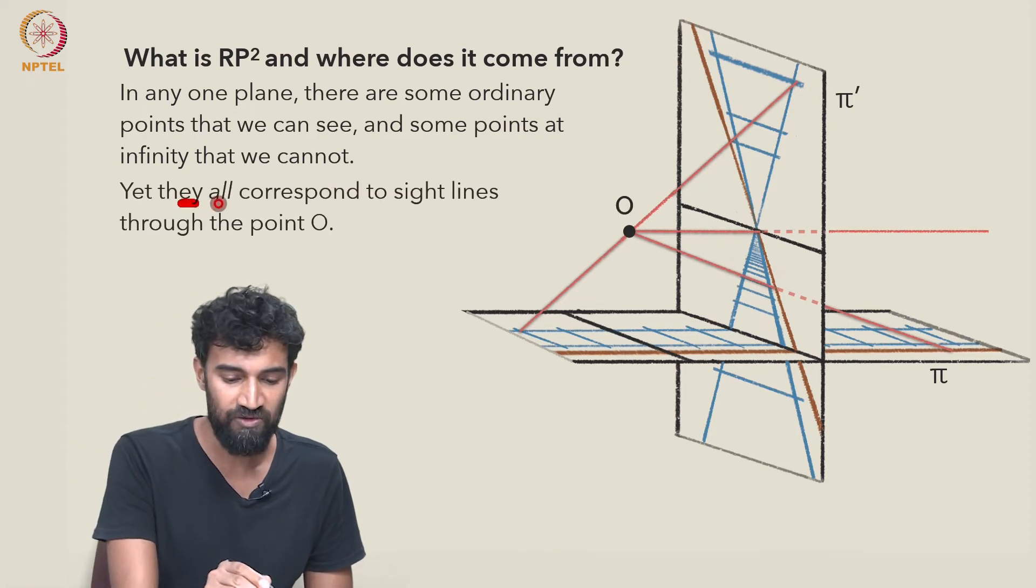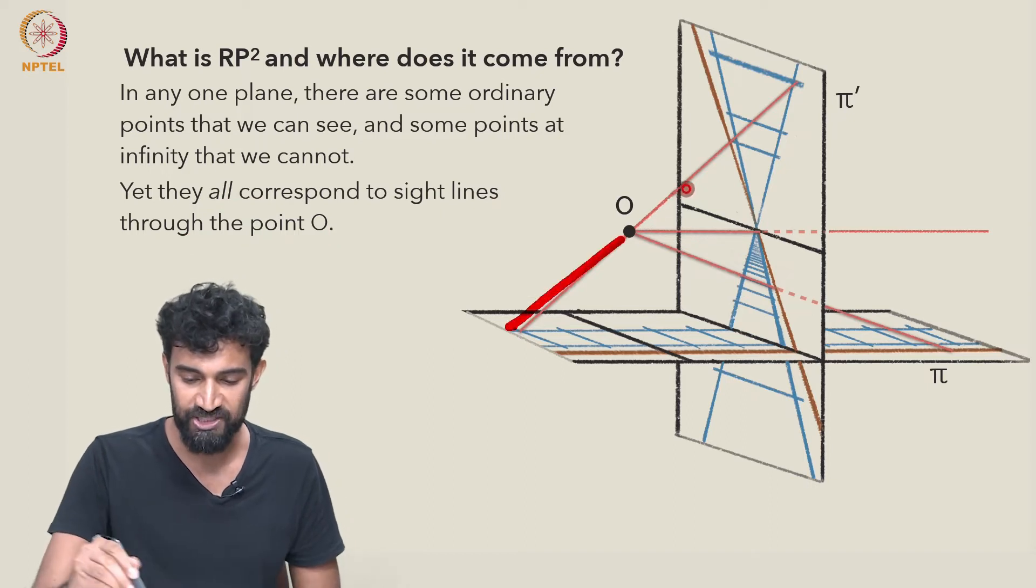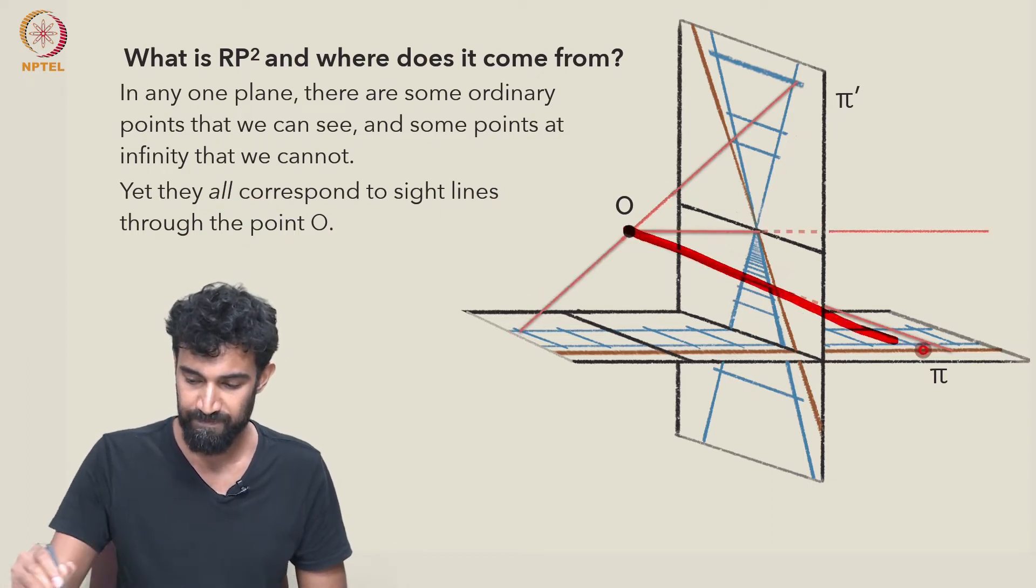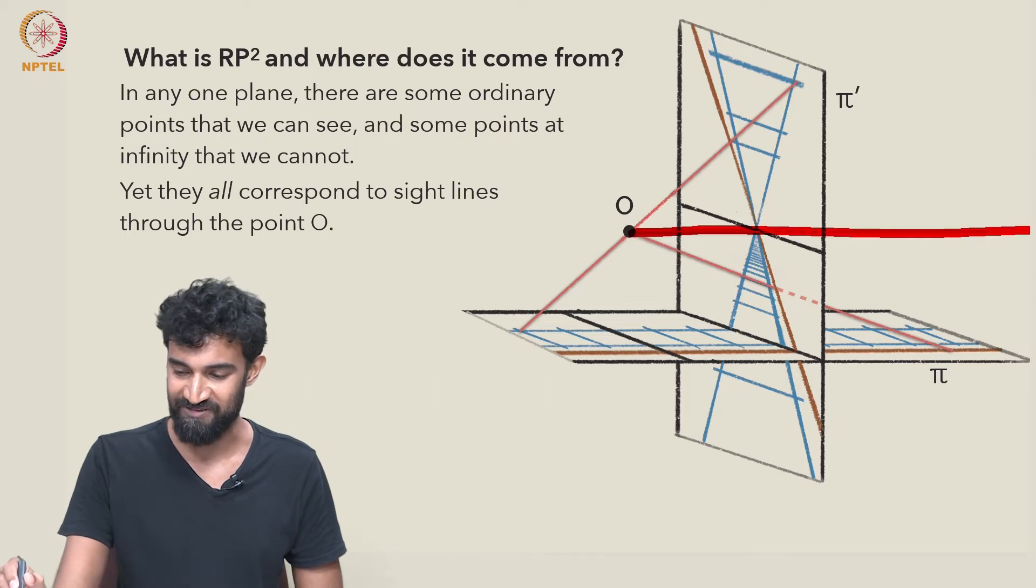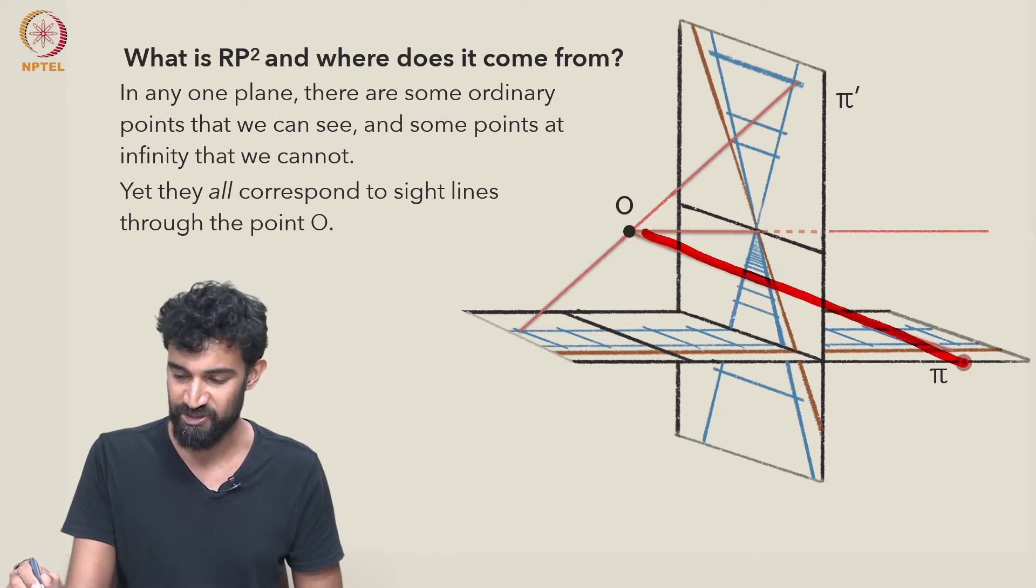And yet all of these correspond to sight lines through a point O. So this point at infinity here corresponds to a sight line through O. This point over here, this ordinary point, is a different sight line through O.